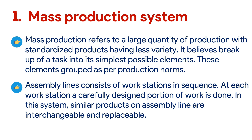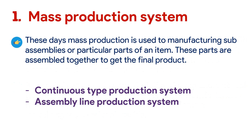Assembly lines consist of workstations in sequence. At each workstation, a carefully designed portion of work is done. In the system, similar products on assembly lines are interchangeable and replaceable. These days, mass production is used to manufacture sub-assemblies or particular parts of an item, and these parts are assembled together to get the final product.